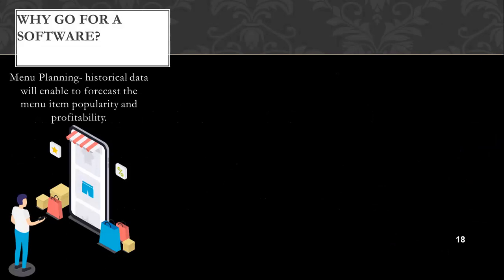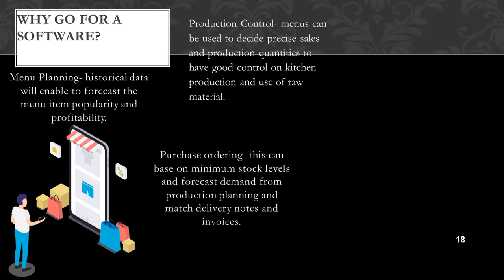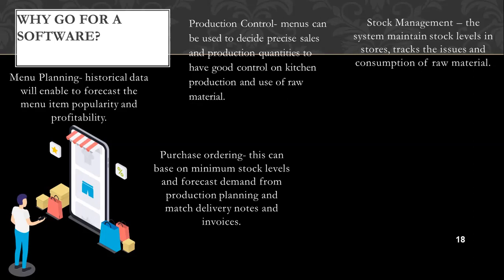Why do we go for software? Historical data will enable forecasting of menu item popularity and profitability, helping you plan a better menu through menu engineering. Menus can be used to decide precise sales and production quantities to maintain good control over kitchen production and use of raw material. Purchase ordering can be based on minimum stock levels and forecast demand from production planning, and can match delivery notes and invoices. The system also maintains stock levels in stores and tracks issues to various outlets and consumption of raw material.